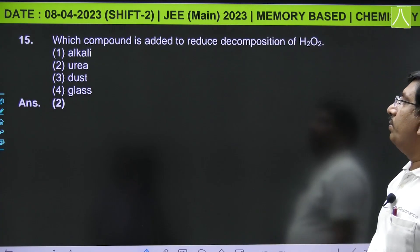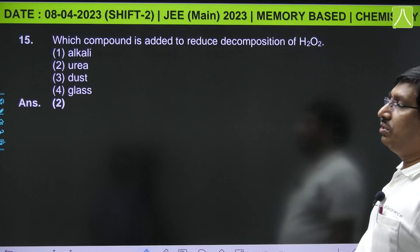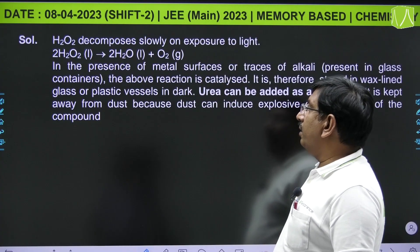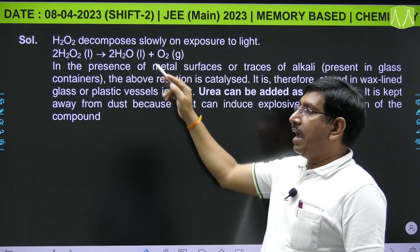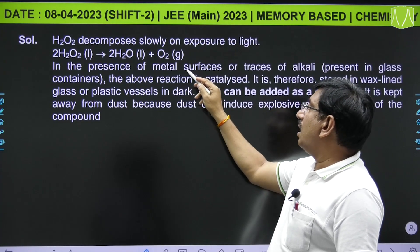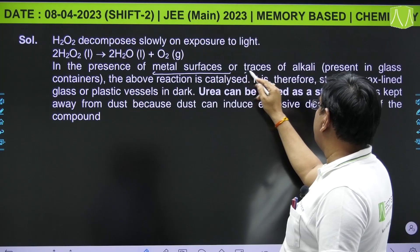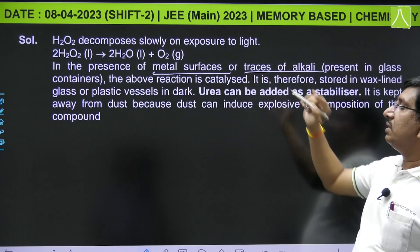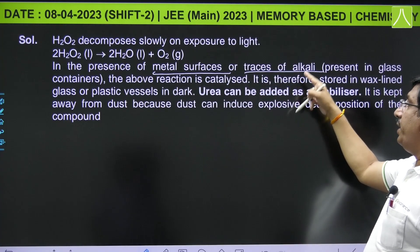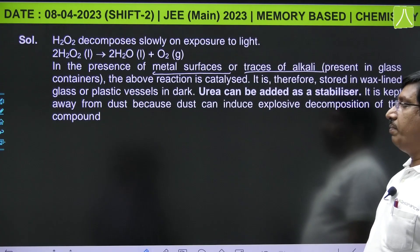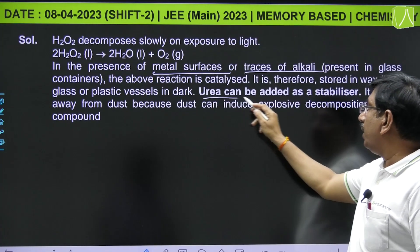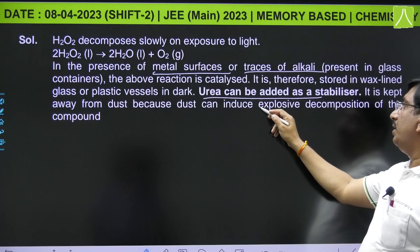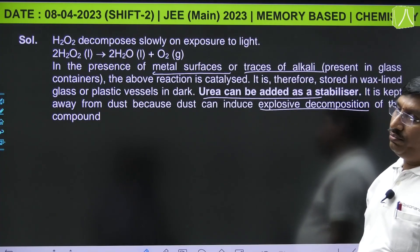Next, which compound is added to reduce decomposition of hydrogen peroxide? Generally hydrogen peroxide decomposes slowly according to this reaction. In presence of metal surfaces or traces of alkali, or when present in glass containers, this reaction is catalyzed. So it is stored in wax-coated glass or plastic vessels, and urea can be added as stabilizer. It is kept away from dust because dust can induce explosive decomposition of hydrogen peroxide.